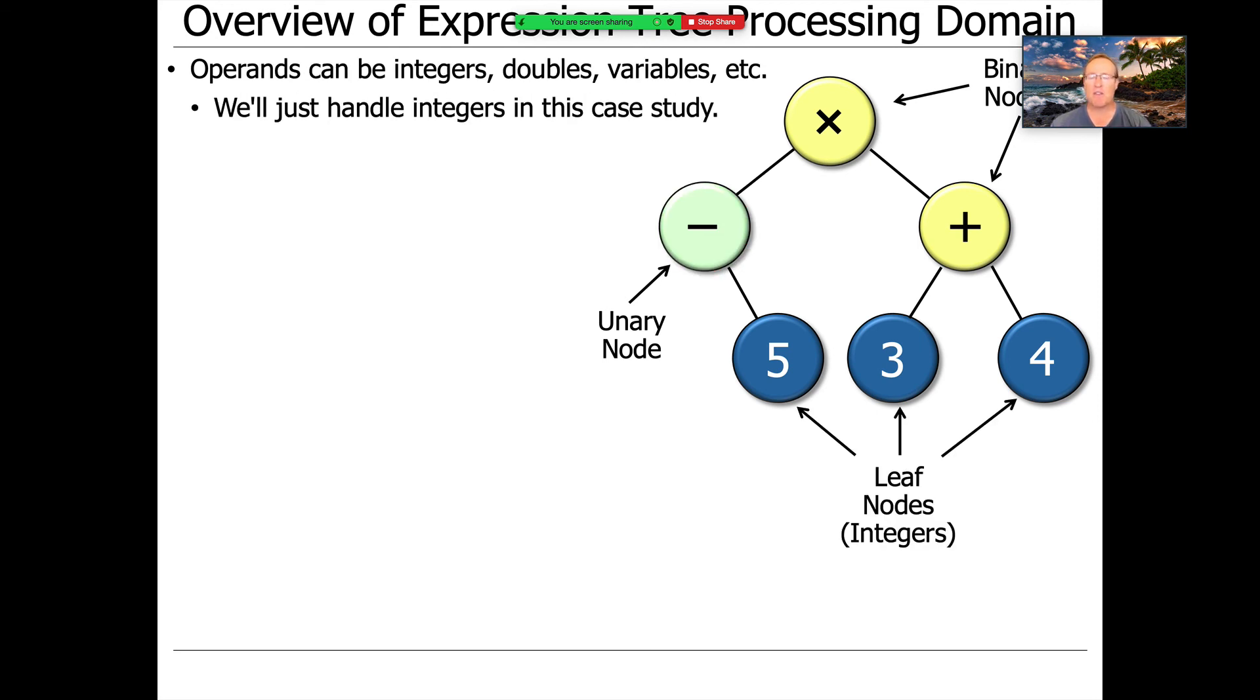The operands can be various types, they could be integers, doubles, variables, and so on. We're just going to use integers in this particular case study, but it's easy to switch to doubles or floats or fixed point or whatever you need to do just by using things like generic types or parameterized types.